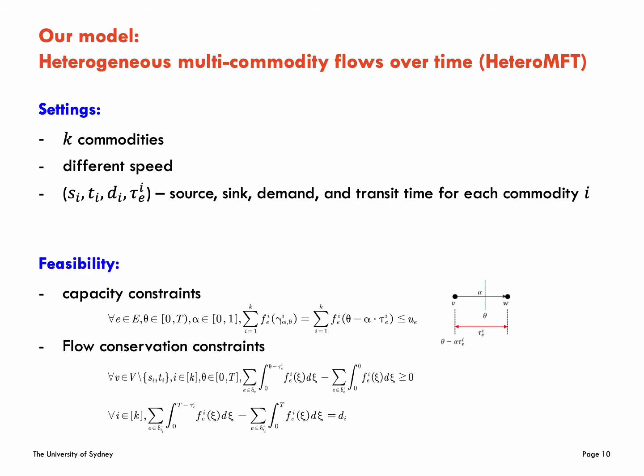By construction, the feasibility of the hetero problem is as follows. For all edges and theta within the range of 0 to T, alpha within the range of 0 to 1, we have capacity constraints at each edge. The flow fulfills the flow conservation constraints. Notice that the intermediate nodes can store flows.